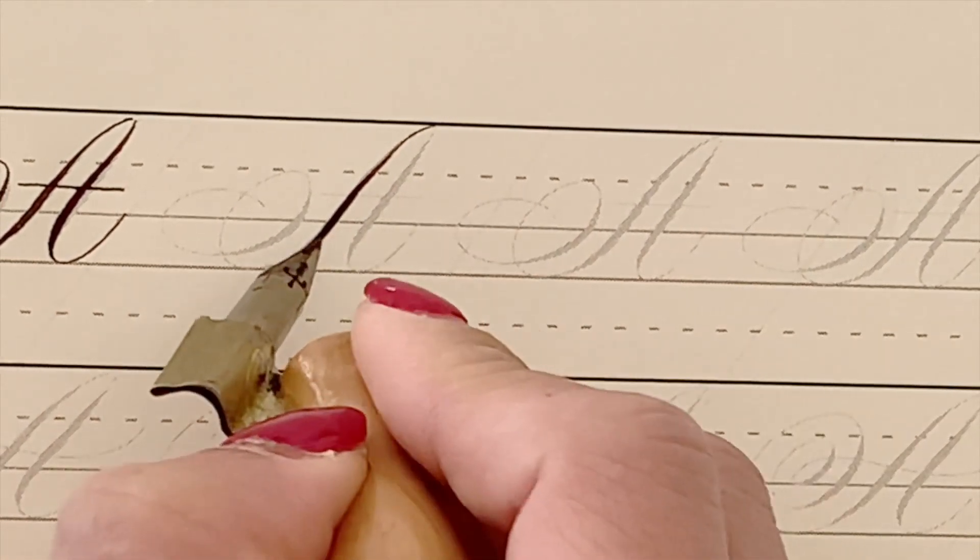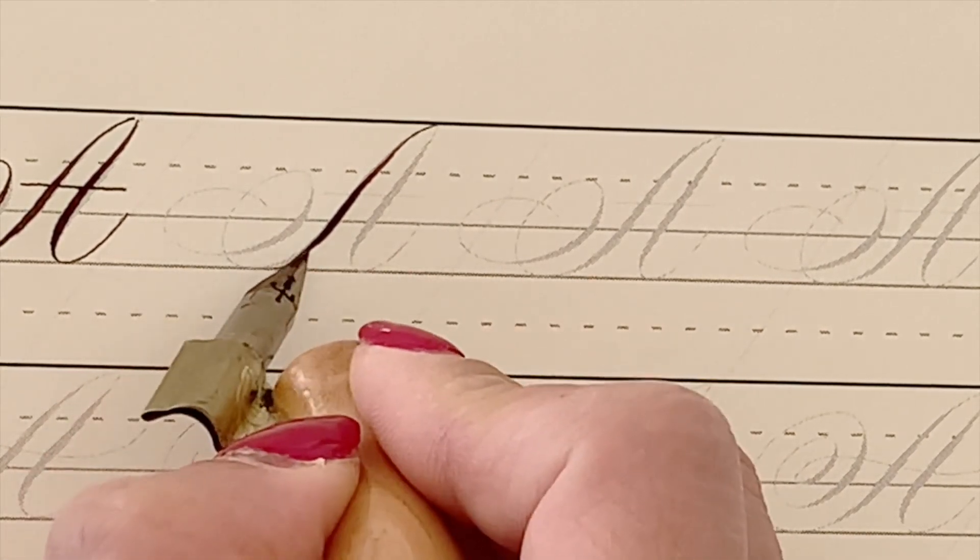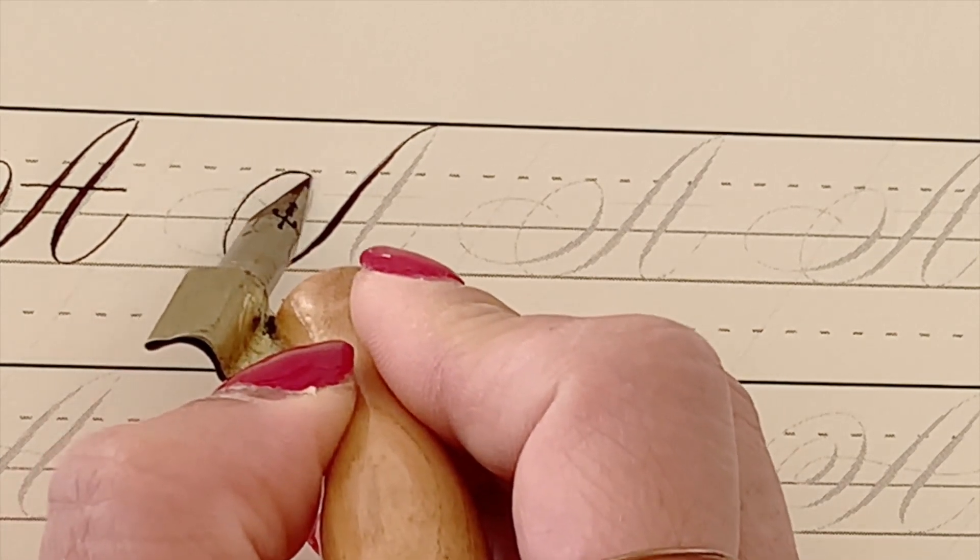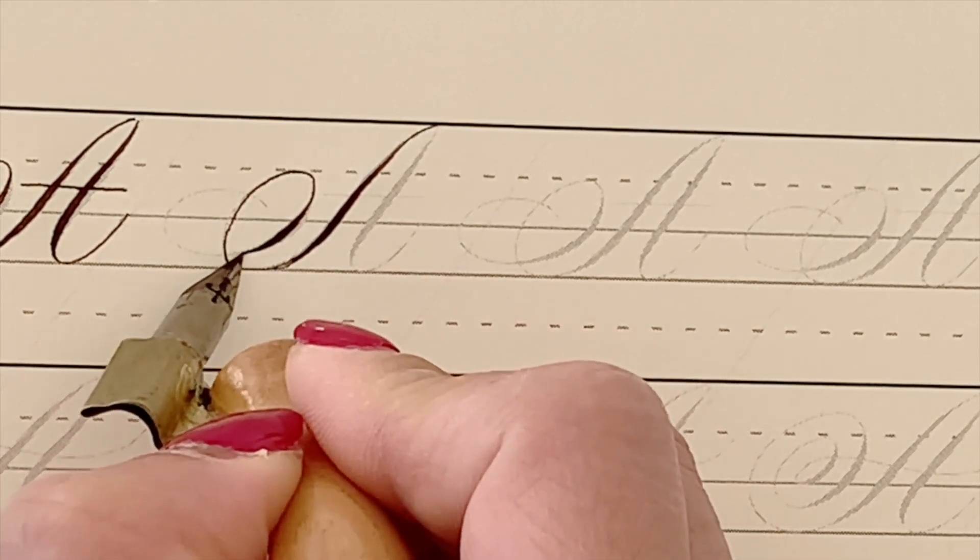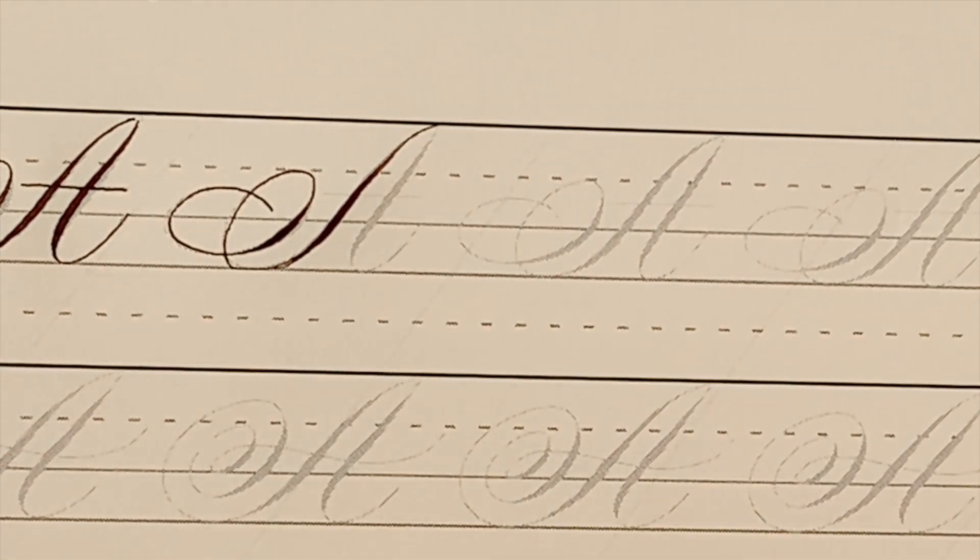Now basically, once you come down here, you notice that this is going up into an oval. So continue going up into an oval, then another oval, into a horizontal oval.